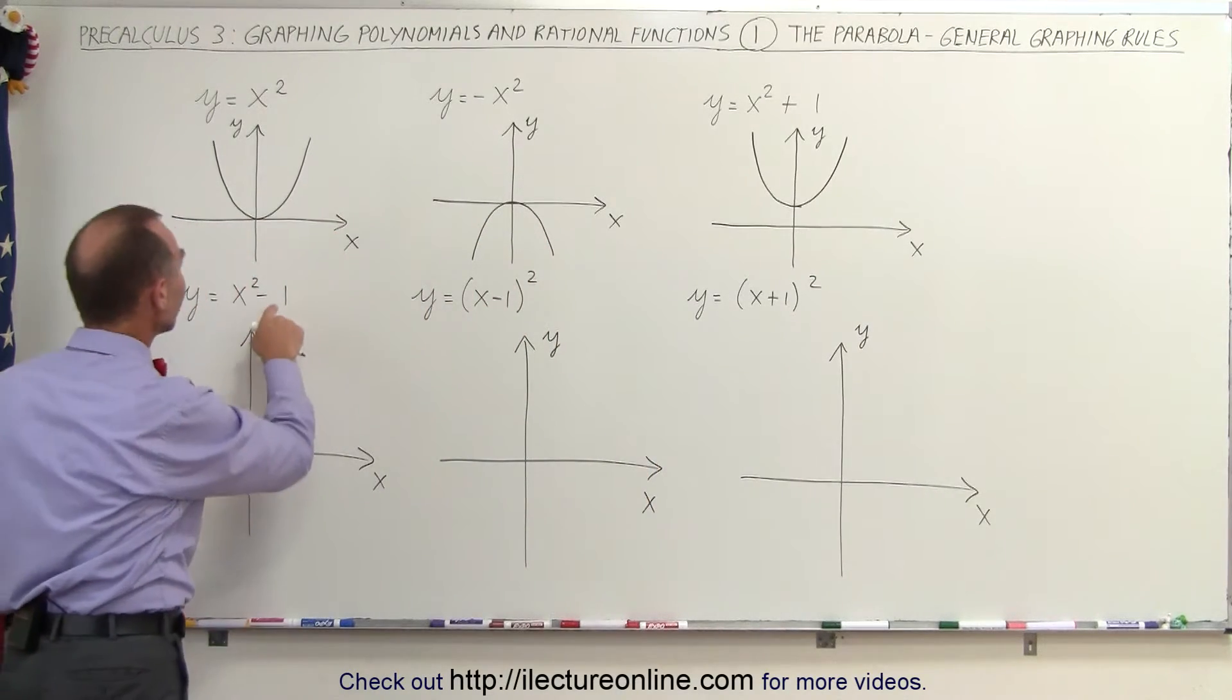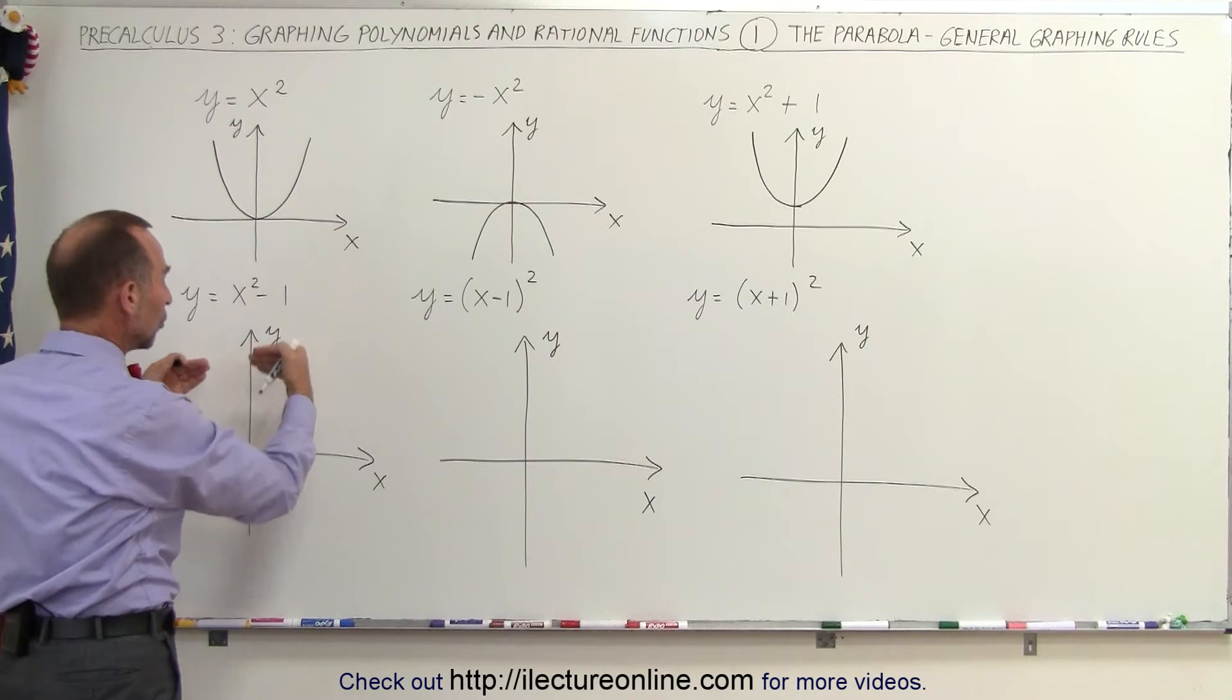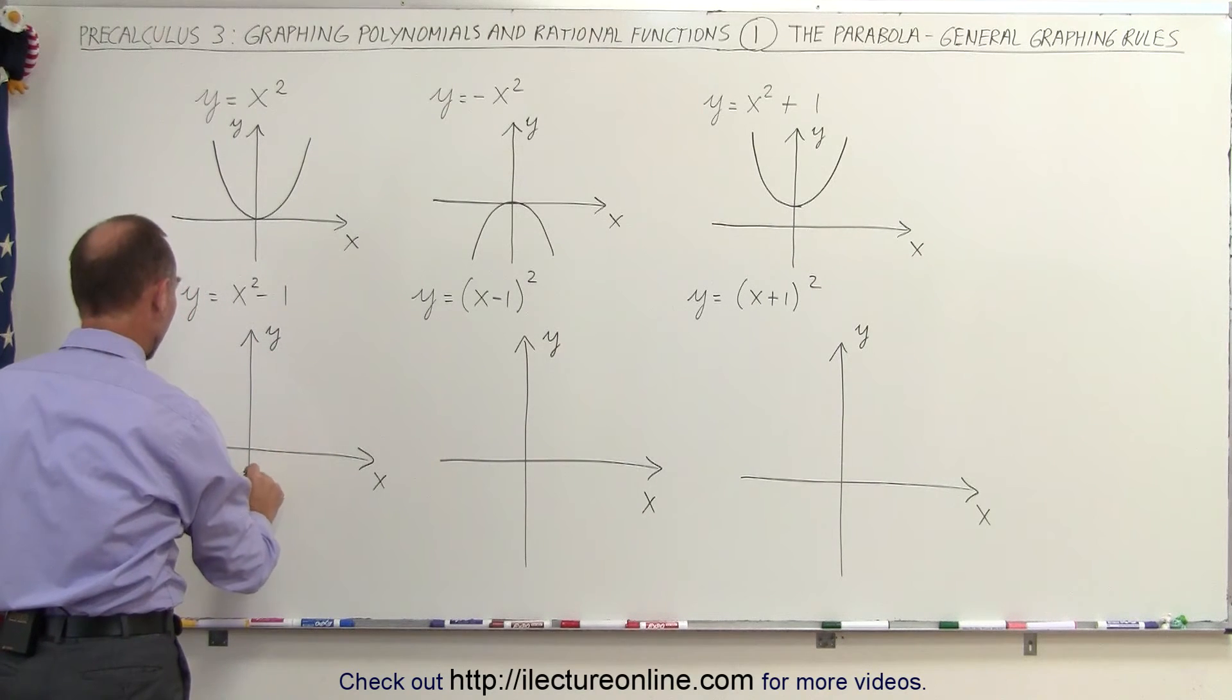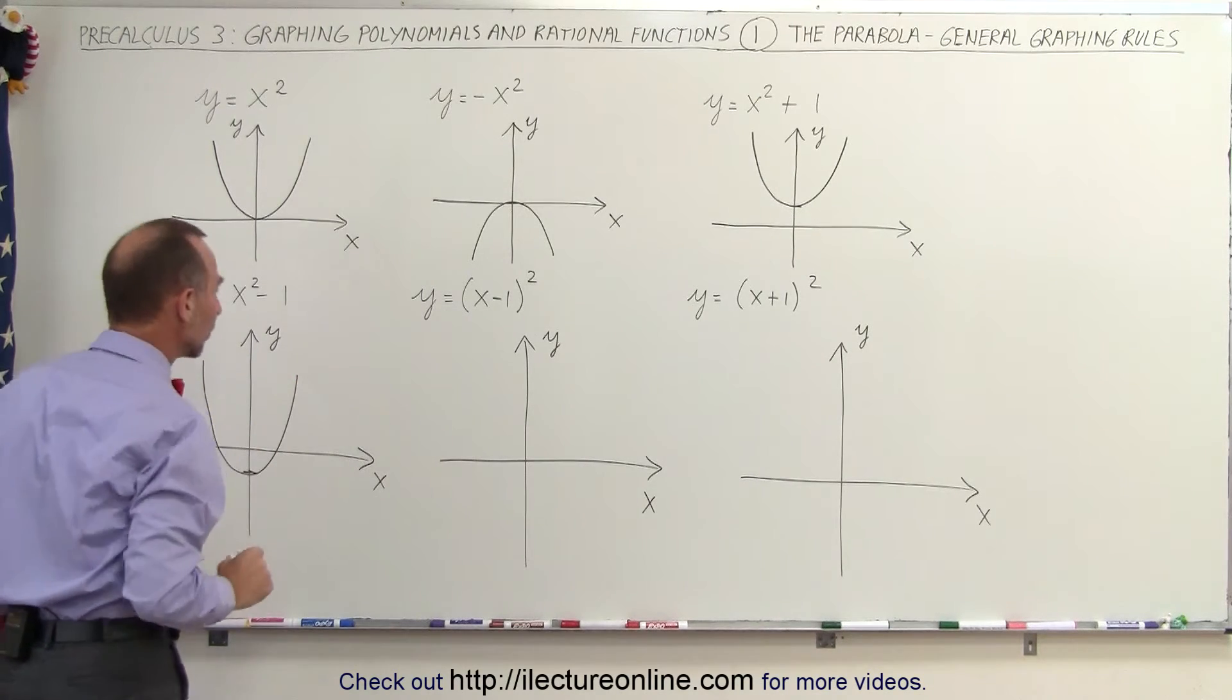If we have a negative constant, it simply lowers the function by 1. So we go to y equals negative 1, and our function now will look like this with the vertex right there at y equals negative 1.